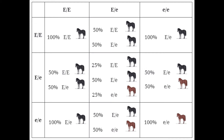This is often symbolized using letters — in this case we use capital E or lowercase e to show whether a horse has the dominant or recessive allele. The dominant allele is shown with the capital letter and the recessive allele with the lowercase letter. The dominant allele that codes for a black coat is shown with capital E. The allele that codes for a red coat is shown with lowercase e, as it's recessive. So a black horse can have either two capital Es or a capital E and a lowercase e, whereas a red coat horse must have two lowercase Es.